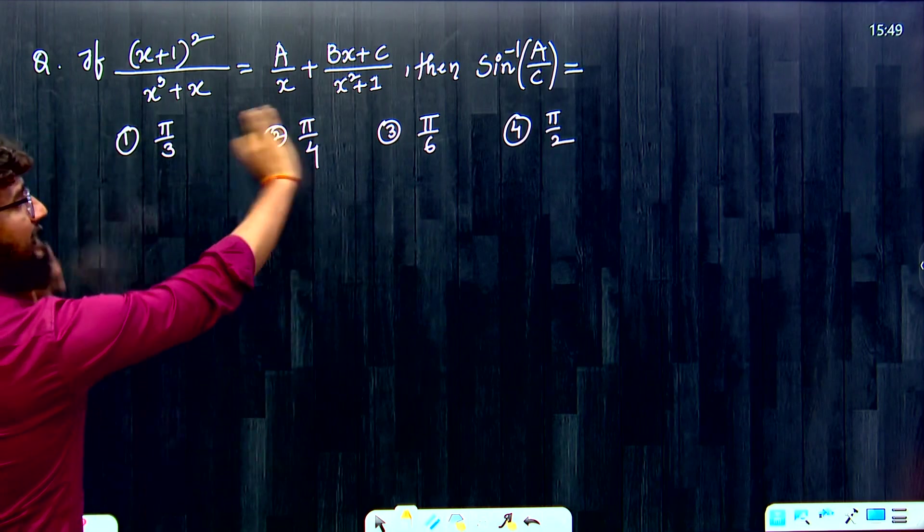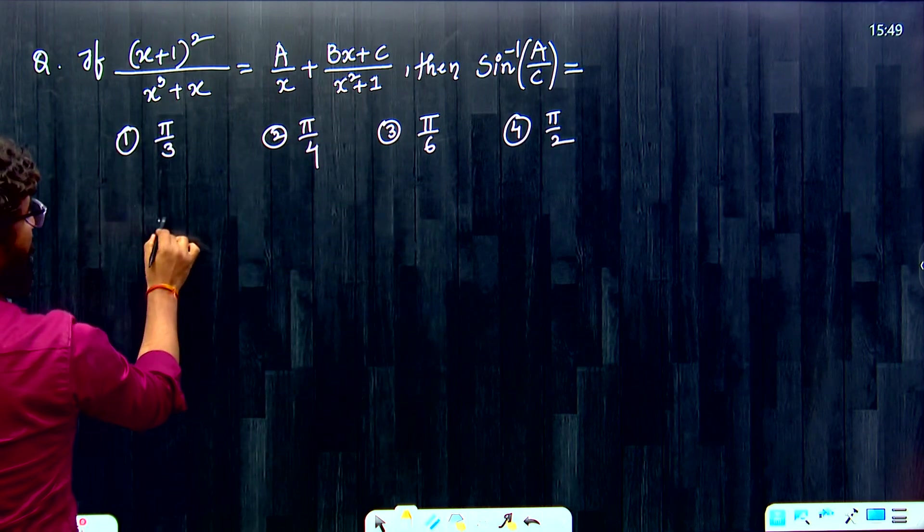This is method 3 question. Just take LCM. Right hand side, take LCM. Denominators cancel.